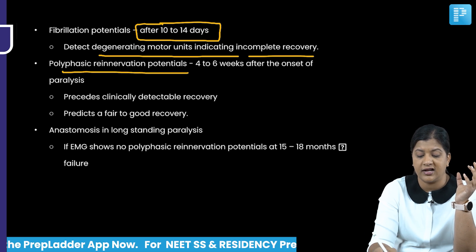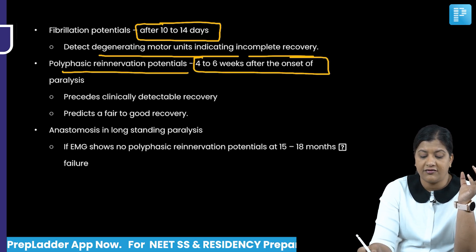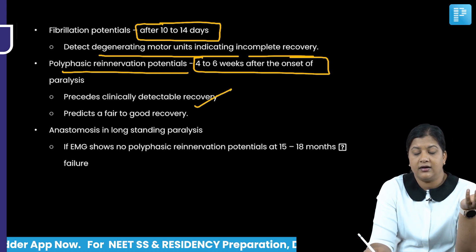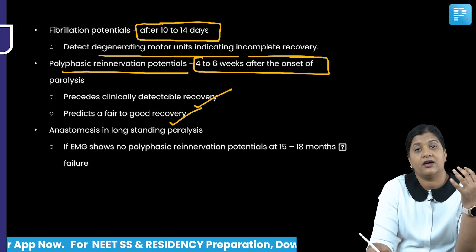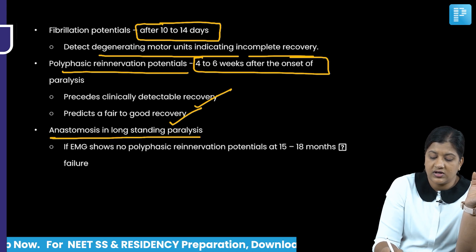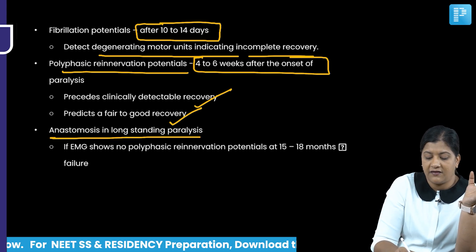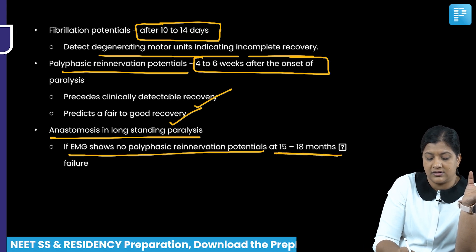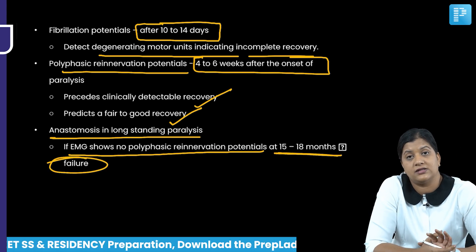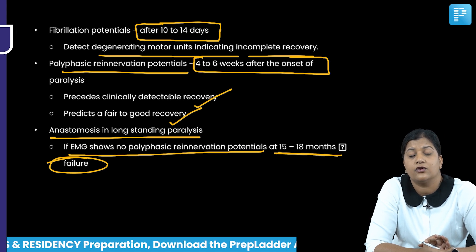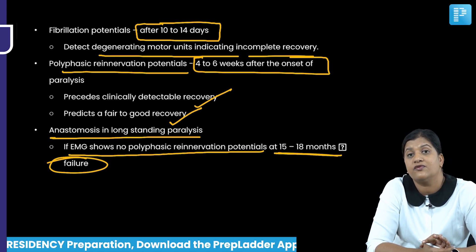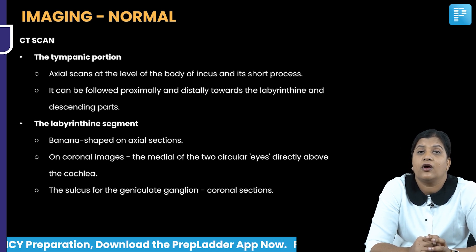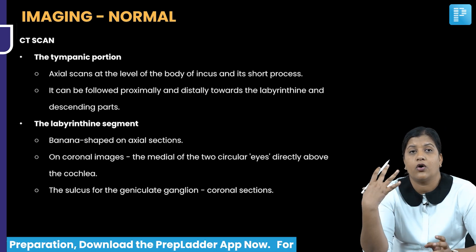Polyphasic potentials appearing four to six weeks after onset of facial nerve palsy indicate early clinically detectable recovery with a fair to good prognosis. After nerve anastomosis for long-standing paralysis, if EMG shows no polyphasic innervation at 15 to 18 months, the procedure has failed.